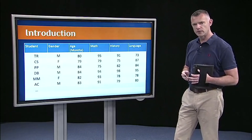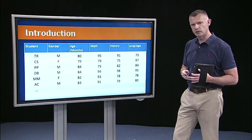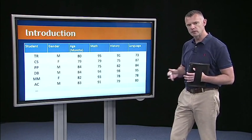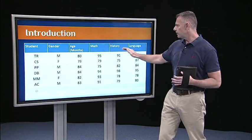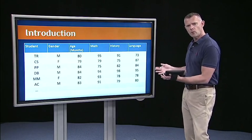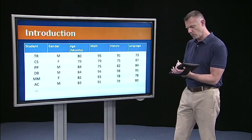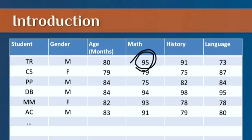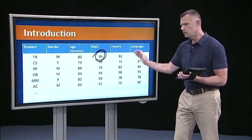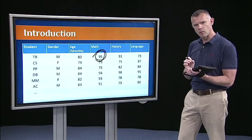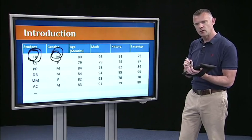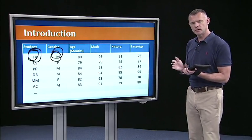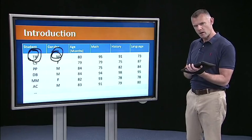It's very common for one row to pertain to one student or one case in your data file. So we have a student, their initials in the first column, then their gender. This first student TR is male. Their age in months, so these are elementary school children. And then their grades in certain classes. So what do I mean by data? Well, each one of these little points, so like TR's really nice 95 in math, is a data point. We assigned a value to a variable, math score for a particular student. That's a quantitative piece of data. TR is a name, TR is gender. Those are characters that we assigned as values. So those are examples of qualitative data.